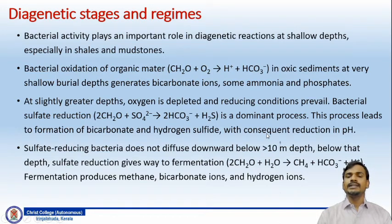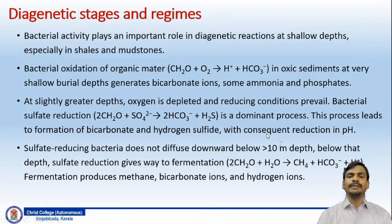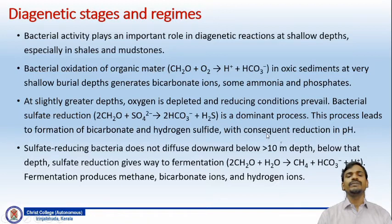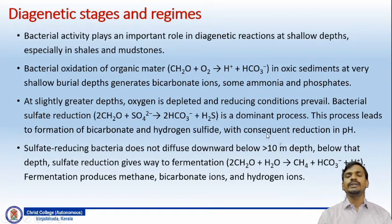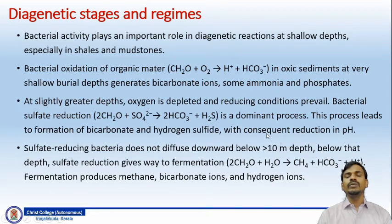At slightly greater depth, oxygen is depleted and reducing conditions prevail. Bacterial sulfate reduction is the dominant process at this depth: CH₂O plus SO₄²⁻ gives bicarbonate and H₂S (hydrogen sulfide). This process leads to the formation of bicarbonate and hydrogen sulfide with a consequent reduction in the pH of the pore water. The sulfate-reducing bacteria do not diffuse downward beyond a depth of greater than 10 meters, and below that depth sulfate reduction gives way to fermentation.